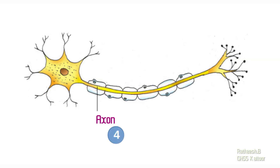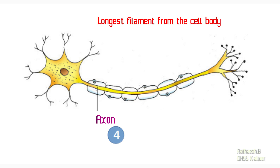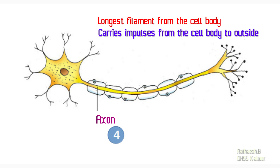The next part of a neuron is axon. You can observe the axon in this picture. Axon is the longest filament from the cell body. The small branches from the cell body are called dendron, and the longest branch of a neuron is called axon. The function of axon is to carry impulses from the cell body to outside.